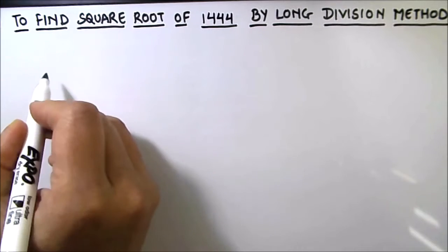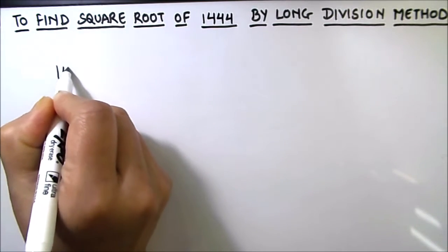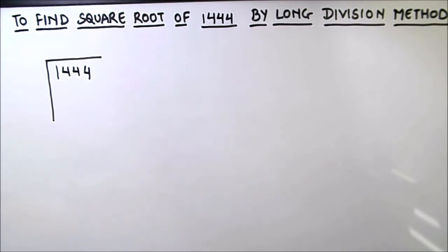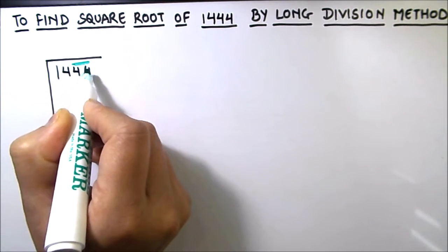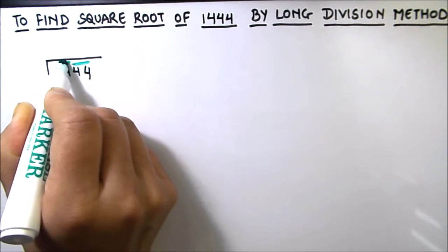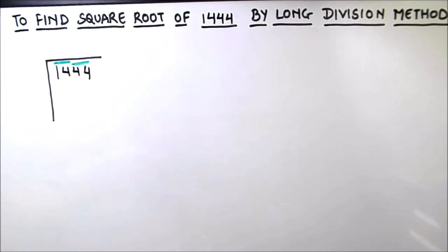So we have our number as 1444. The first step in the long division method is to make pairs of numbers starting from the units digit. So we have our units digit as 4. So 4, 4 is our first group and 1, 4 is our second group. So we have two groups: 1, 4 and 4, 4.